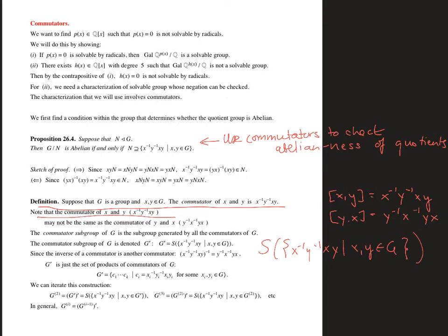It turns out that inverses of commutators are also commutators. So the commutator subgroup, which we call G prime, is just the set of products of commutators. Then we could take all of the commutators of commutators and get G double prime, or G2 — the second commutator subgroup. We could do G triple prime, commutators of commutators of commutators, and so on.